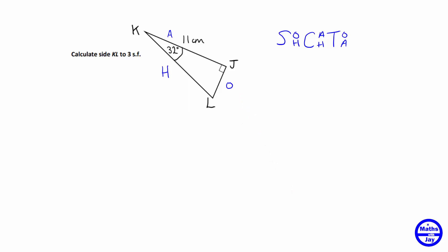And the two sides that we're using are the one that we're trying to find, so that's the hypotenuse, and the one that we're given, so that's the 11 centimeters, so we've got the adjacent and the hypotenuse. So we're using the cosine ratio.